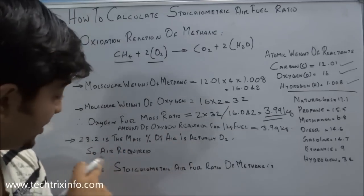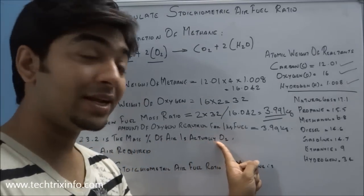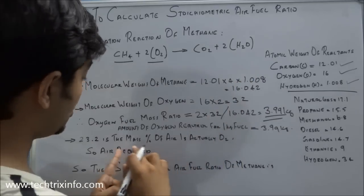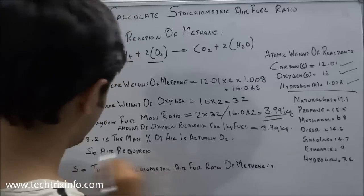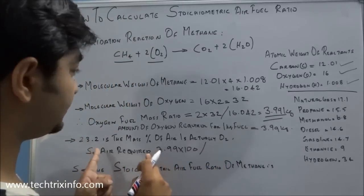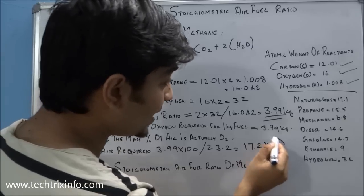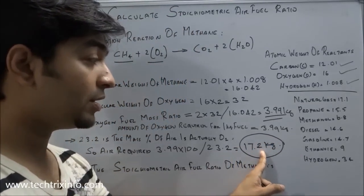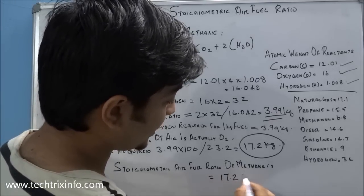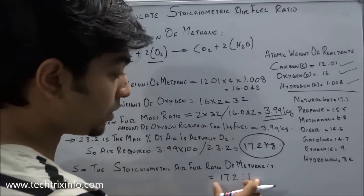As we know, air contains 23.2% oxygen by mass. So to calculate the amount of air required to burn 1 kg of methane, we take 3.99 × (100 / 23.2), which gives us 17.2 kg of air. So we need 17.2 kg of air to burn 1 kg of methane.